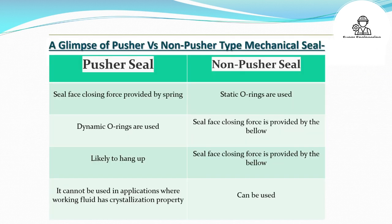A comparison of pusher versus non-pusher type mechanical seal: Pusher seal — seal face closing force is provided by a spring; dynamic O-rings are used; likely to hang up; cannot be used in applications where the working fluid has crystallization property. Non-pusher seal — static O-rings are used; seal face closing force is provided by the bellows; can be used in such applications.